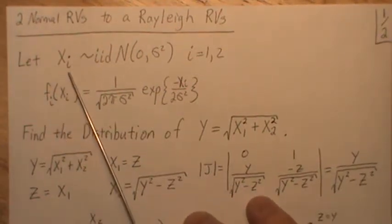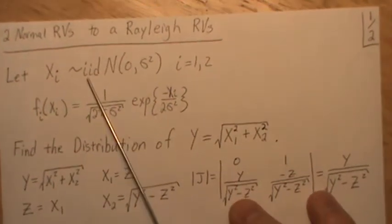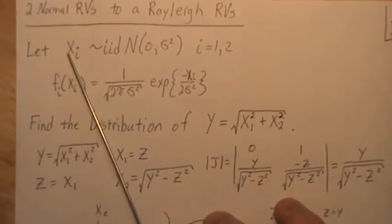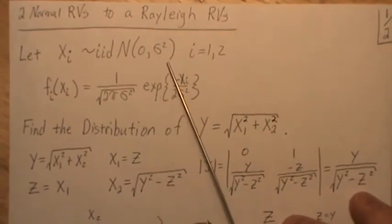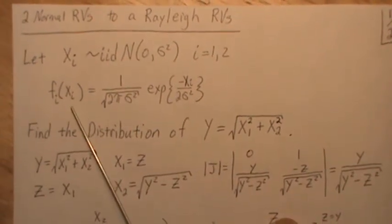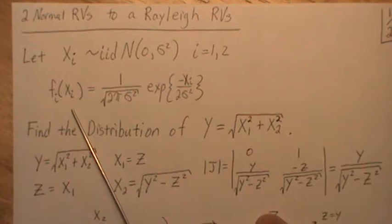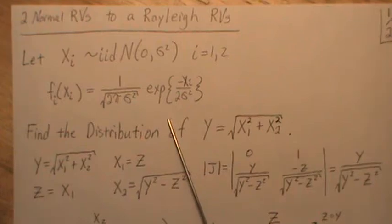Let's let Xi be iid normal zero sigma squared random variables, i equals 1 to 2. So x1 and x2, they're both normally distributed, mean zero, they have a common variance called sigma squared. This is the density for xi, f of xi, and it's just the standard normal distribution.